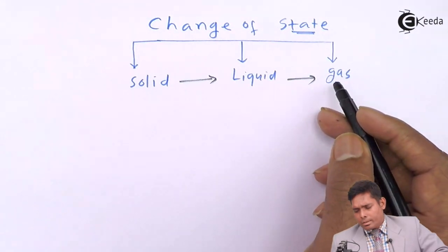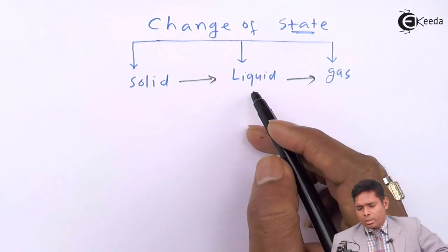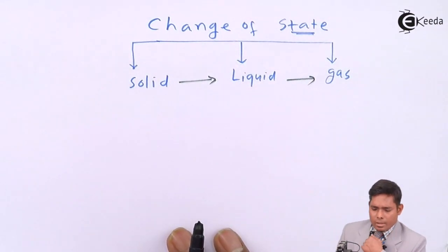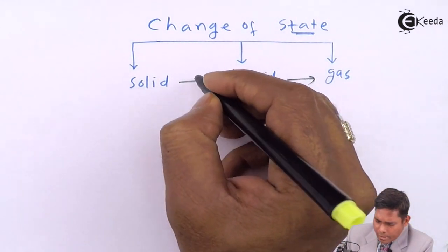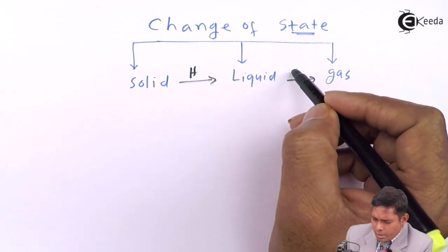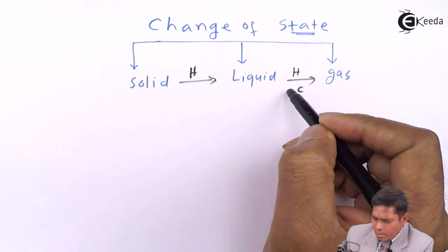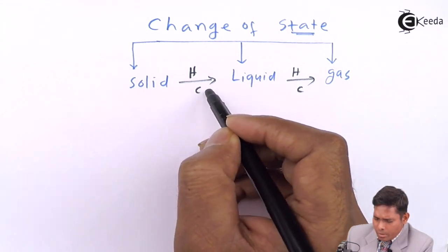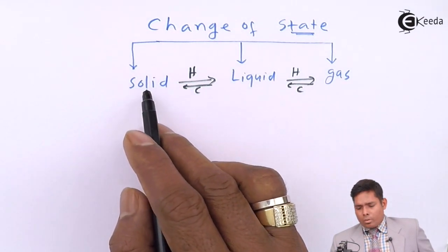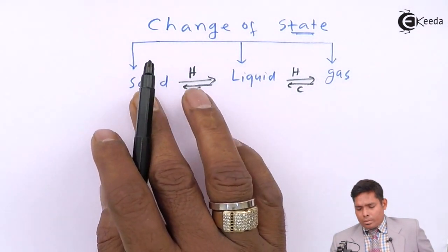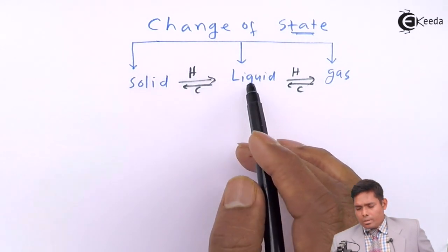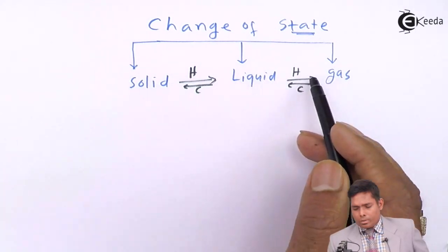Vice versa, if you cool down the gas it will become liquid, and further cooling will solidify it and it becomes a solid. So heat gives you liquid and then gas, while cooling gives you liquid and then solid. This cooling process is called freezing.